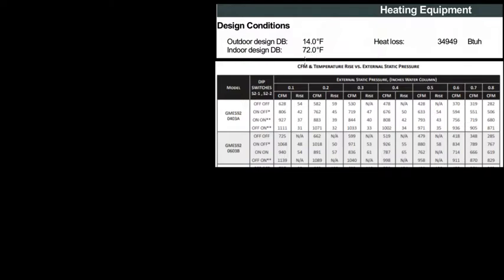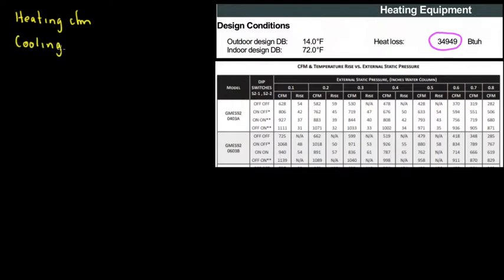To begin with, what we have is the heat load calculation. The heat load is 34,949 BTUs per hour. When we are sizing equipment for residential purposes, we actually have two CFMs: a heating CFM and a cooling CFM.